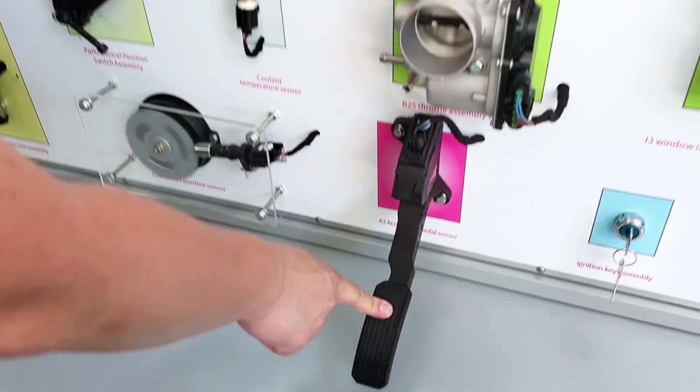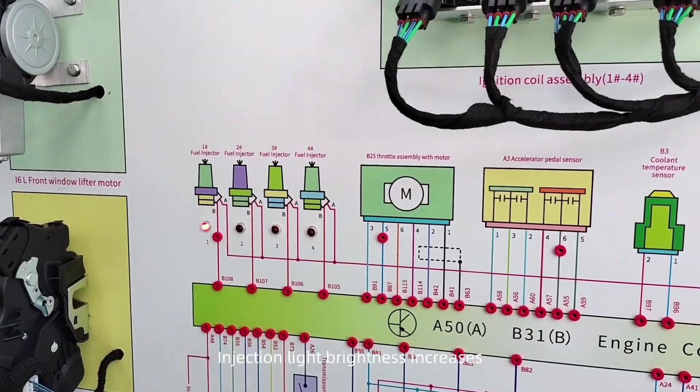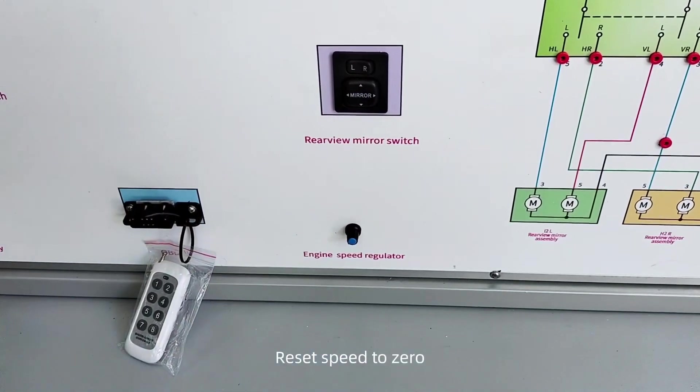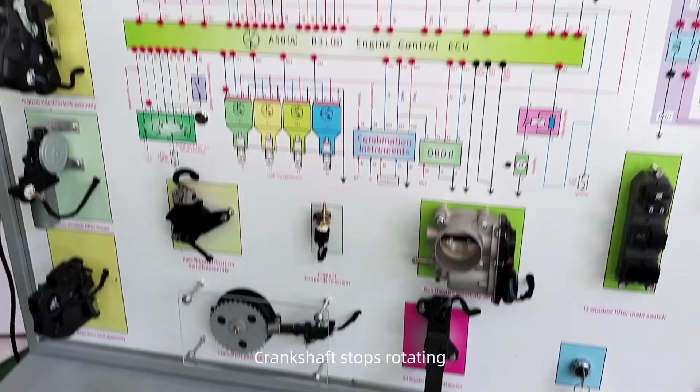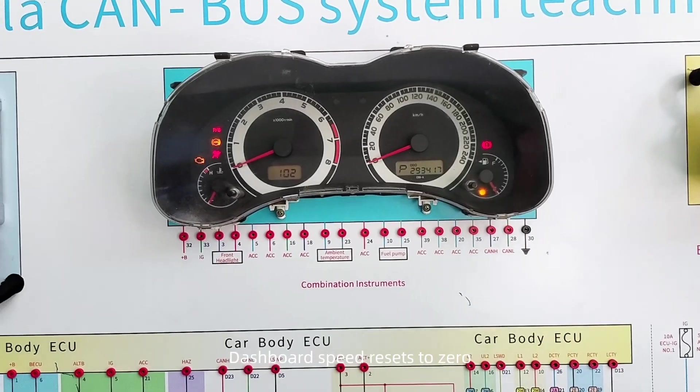Press the accelerator pedal. Throttle changes. Injection light brightness increases. Reset speed to zero. Crankshaft stops rotating. Stop injection and ignition. Dashboard speed resets to zero.